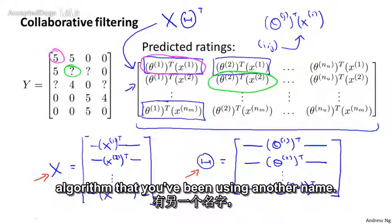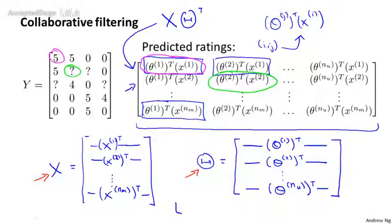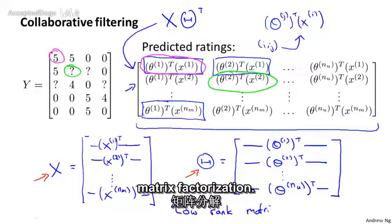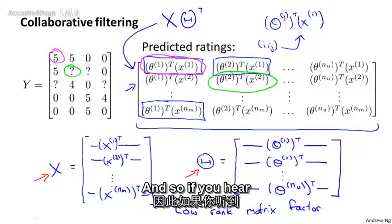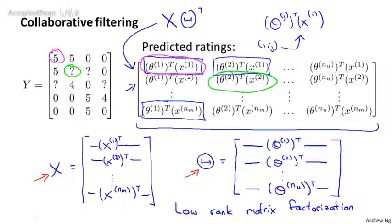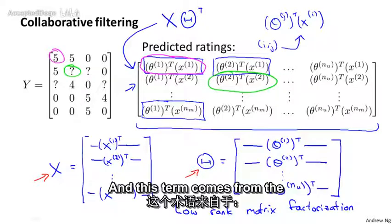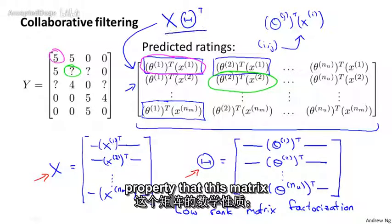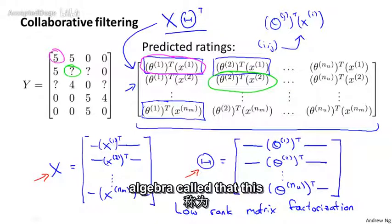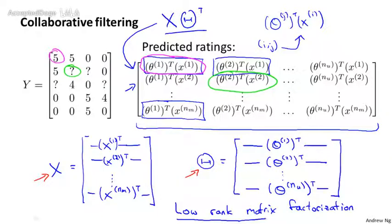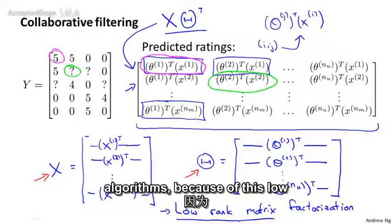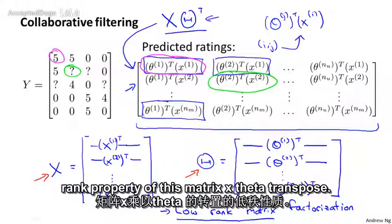To give the collaborative filtering algorithm that you've been using another name, the algorithm that we're using is also called low rank matrix factorization. And so if you hear people talk about low rank matrix factorization, that's essentially exactly the algorithm that we've been talking about. And this term comes from the property that this matrix x times theta transpose has a mathematical property in linear algebra called that this is a low rank matrix. And so that's what gives rise to this name low rank matrix factorization for this algorithm, because of this low rank property of this matrix x theta transpose.